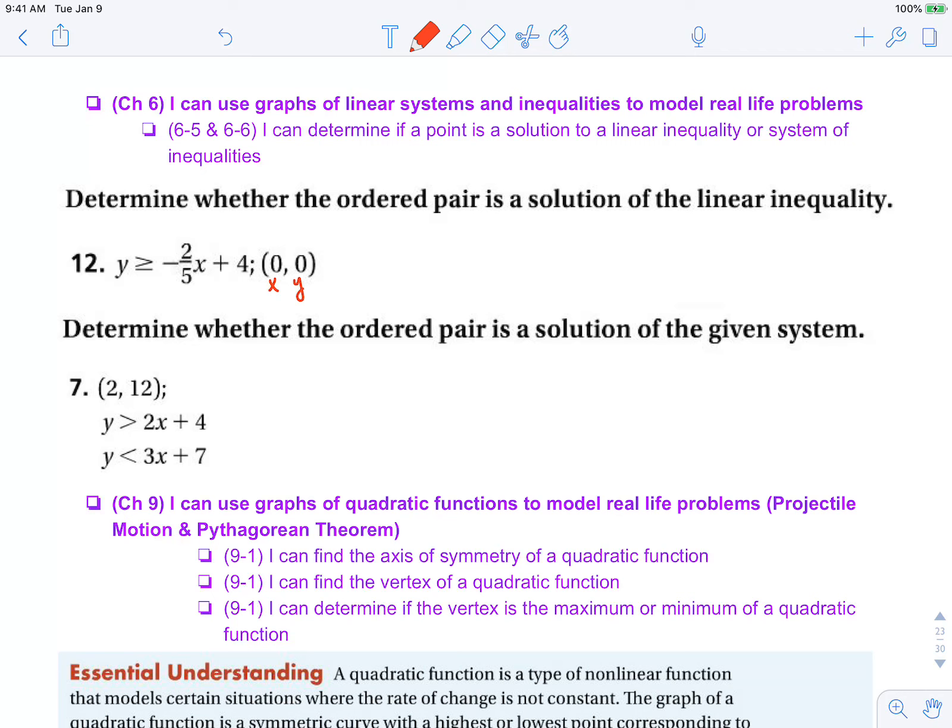We're going to plug that point into this inequality to check. That makes 0 greater than or equal to negative 2 fifths times 0 plus 4, which tells us that 0 must be greater than or equal to 4 if this is a solution.